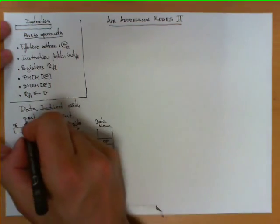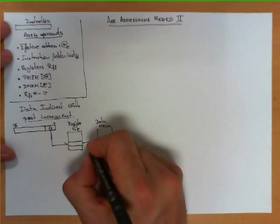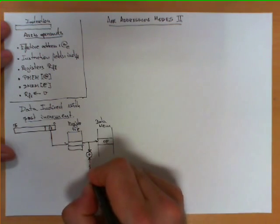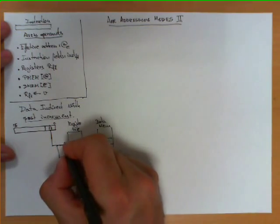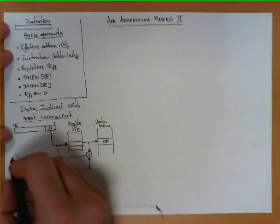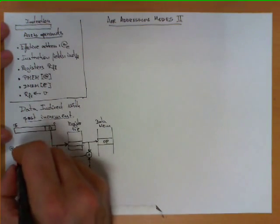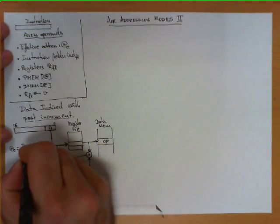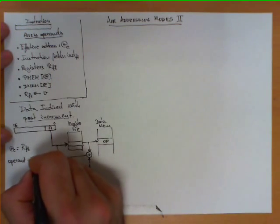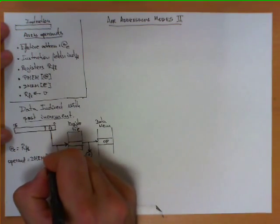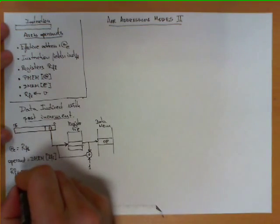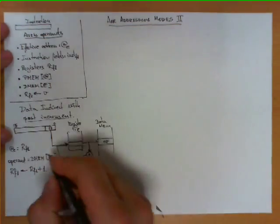The difference with Data Indirect With Post Increment is precisely this: there is a Post Increment, meaning that once the address has been obtained from the register, this address is given to an adder, which increments it by one. Most importantly, this new address is loaded back into the register. So in our notation: the effective address is the content of the register specified by field F1; the operand is in data memory at address RF1; but RF1 then takes the value of RF1 plus 1 — in other words, it gets incremented.